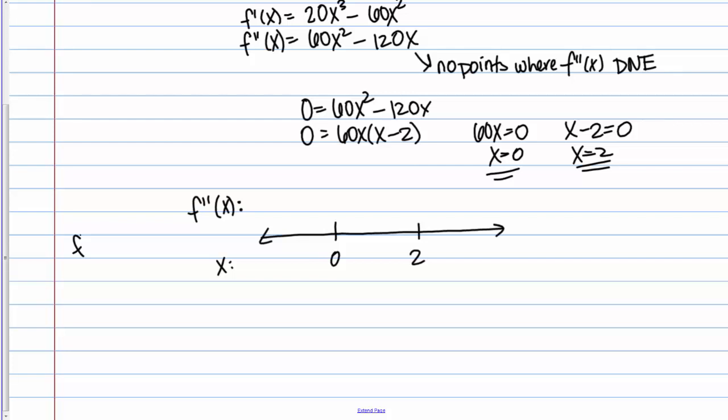Remember the second derivative in factored form is 60x times x minus 2. What I'm going to do is I'm just going to check in each of these intervals just the sign of the second derivative. I don't care what the value actually is. I just care about the sign.